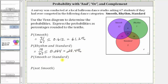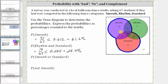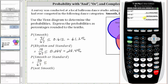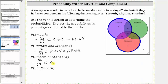Next, we have the probability of smooth or standard. We find the students that competed in smooth or standard in the union of the smooth and standard sets. Here's the smooth set, here's the standard set, and the union of the two sets is this region here. The number of students that competed in smooth or standard is 12 plus 6 plus 9 plus 14, which we know is 41 from the first probability, and then plus 10 plus 5, which gives us a total of 56 out of 67 students. Therefore the probability of smooth or standard is 56/67, which to three decimal places is approximately 0.836, which is 83.6%.